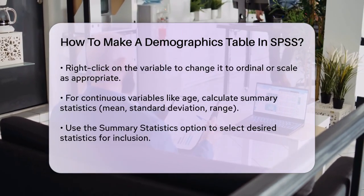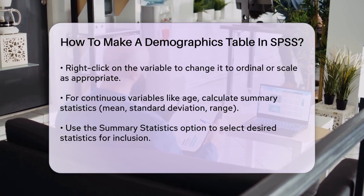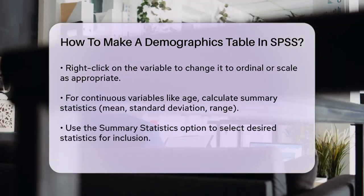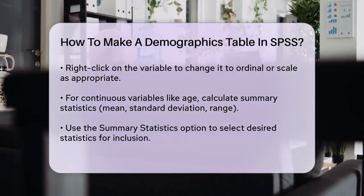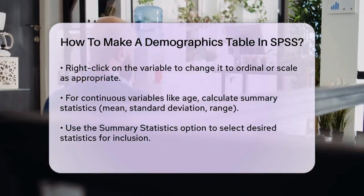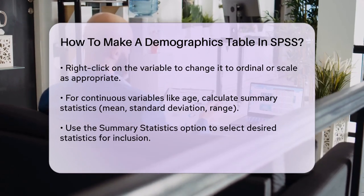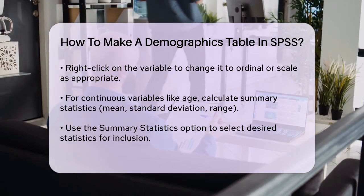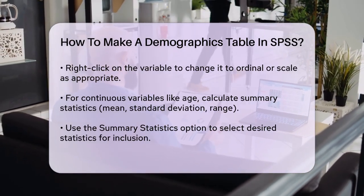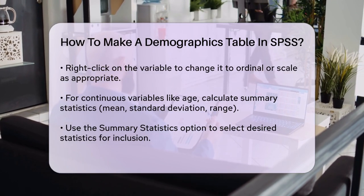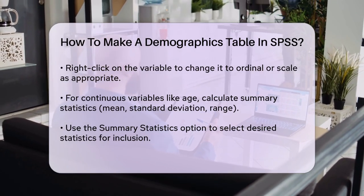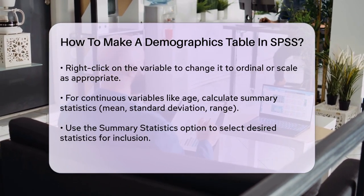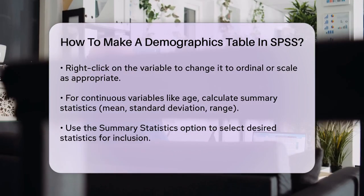For continuous variables like age, you can calculate summary statistics such as mean, standard deviation, and range. To do this, click on any variable in the rows, then go to Summary Statistics. Here, you can select the statistics you want to include, such as mean, standard deviation, and range.